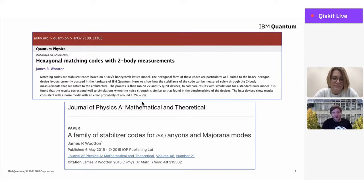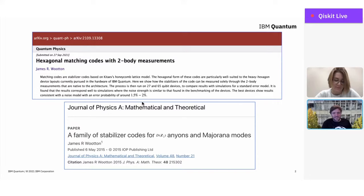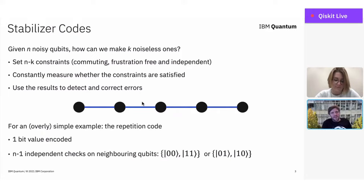I'm going to be mostly talking about work from a paper I put on the archive recently, called Hexagonal Matching Codes with Two Body Measurements. For this, I have to explain what matching codes are, so I'm also going to go through some things from my paper from about five or six years ago, which has a more technical-feeling title, but we'll work out what it's all about.